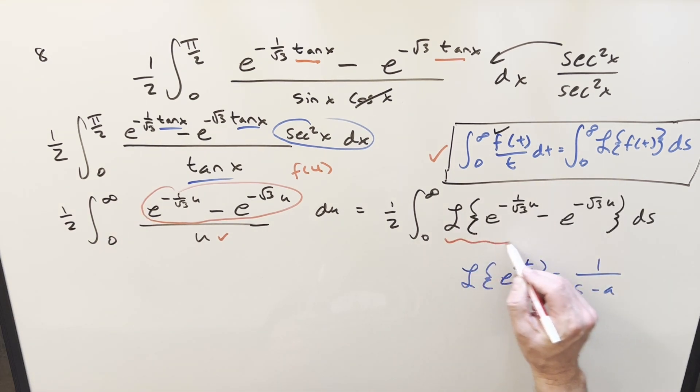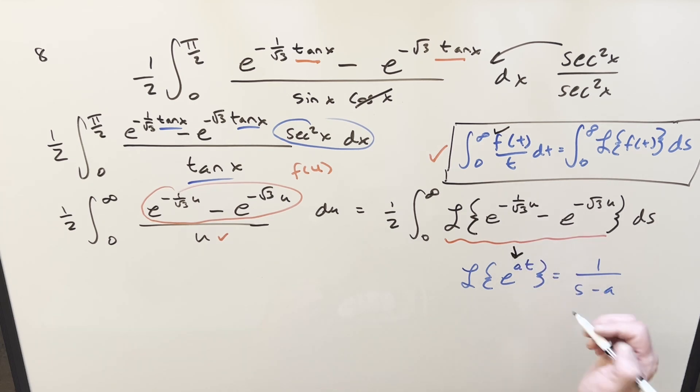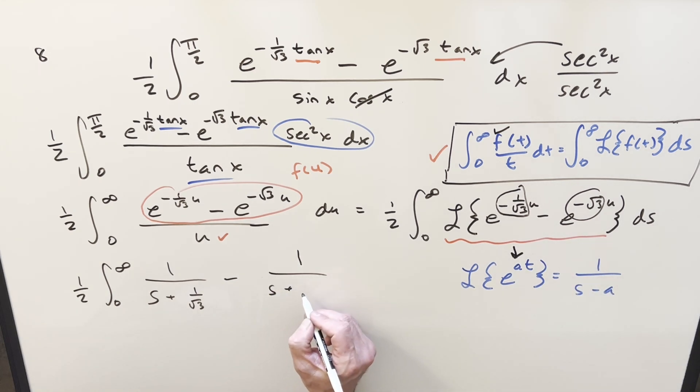So now for this Laplace transform right here, we can use our formula. We can break it up into two Laplace transforms separated by a minus sign. So I'll just kind of do that on the fly, knowing we've got to do two Laplace transforms here using this. So what's going to happen is we're going to have 1 half integral from 0 to infinity. So on this first one, the a value is going to be minus 1 over square root of 3 here. So using this formula, we have 1 over s minus times minus is plus 1 over square root of 3 minus. And then for the next one, the a value is just going to be minus square root of 3. So we get s plus square root of 3.